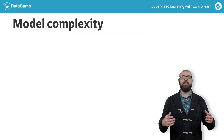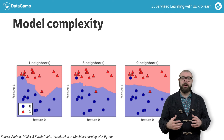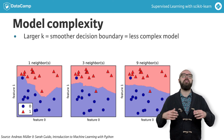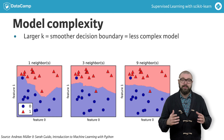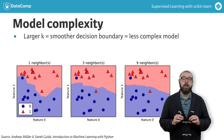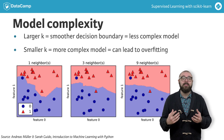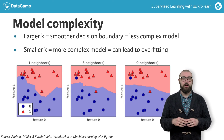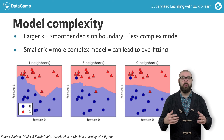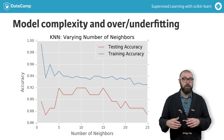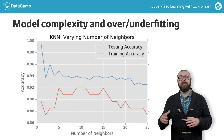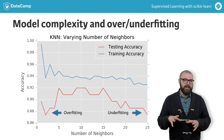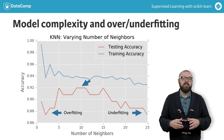Recall that we recently discussed the concept of a decision boundary. Here, we visualize a decision boundary for several increasing values of k in a KNN model. As k increases, the decision boundary gets smoother and less curvy, making it a less complex model. Complex models run the risk of being sensitive to noise in the specific data rather than reflecting general trends — this is known as overfitting. If you increase k even more and make the model even simpler, it will perform less well on both test and training sets, as shown in the model complexity curve. This is called underfitting. There is a sweet spot in the middle which gives the best performance on the test set.